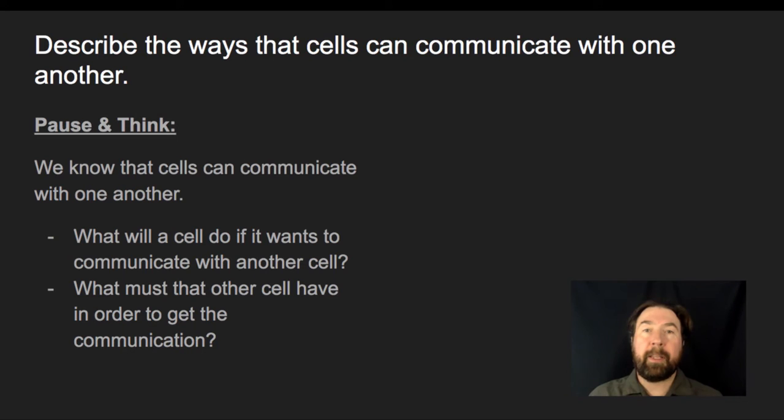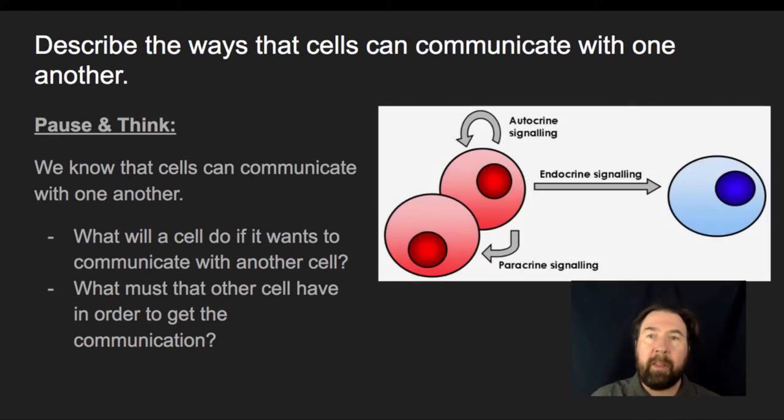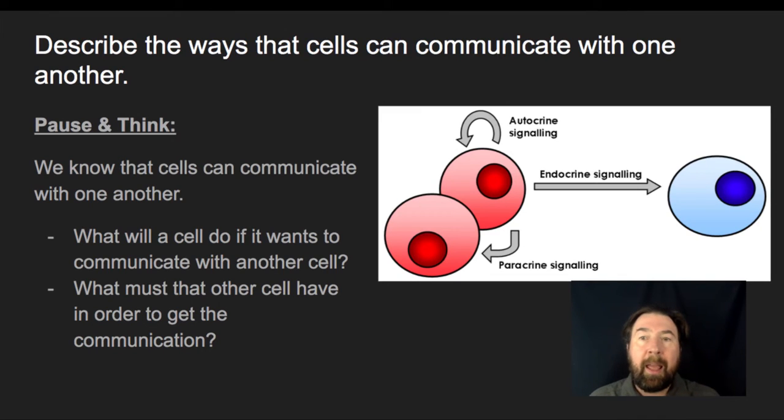All right. So there's a lot of different things you could come up with. You could have come up with some examples of how cells communicate. You may have also come up with some specific names, but all of the trends that you should have seen, your answer should have included the following things. You should have said that a cell is going to be able to produce some sort of chemical signal that it's going to release. Now, those could be things like hormones. Hormones are a very common thing, but there are other types of chemicals that could be secreted from a cell.